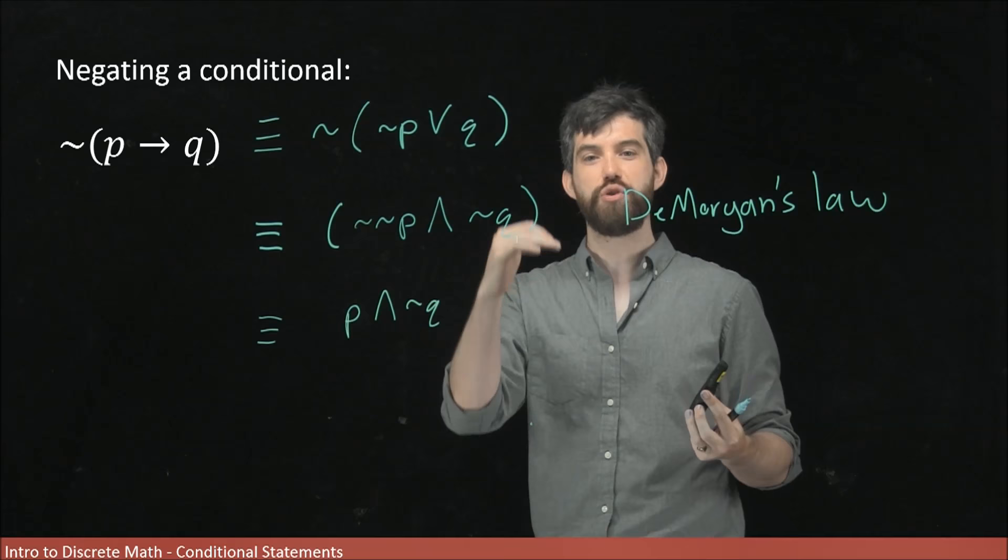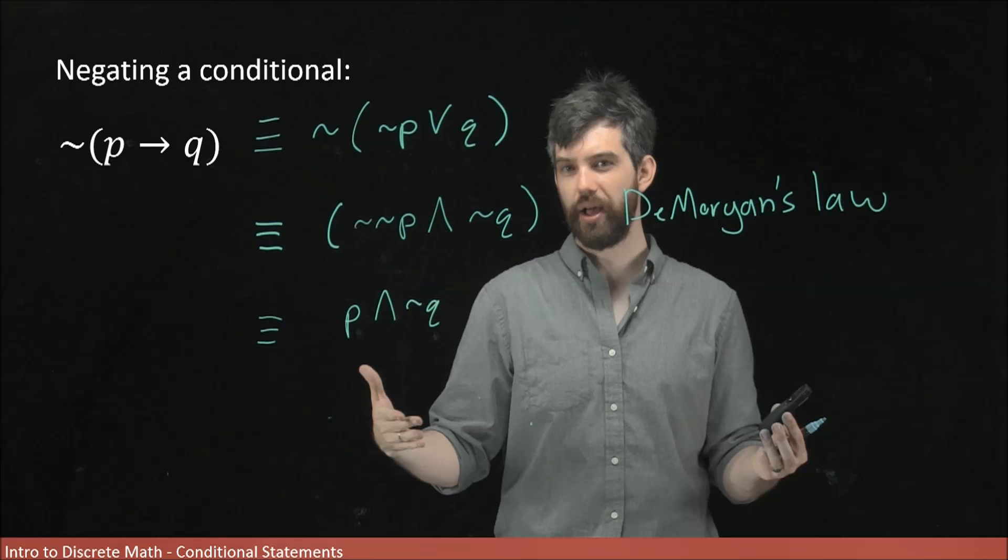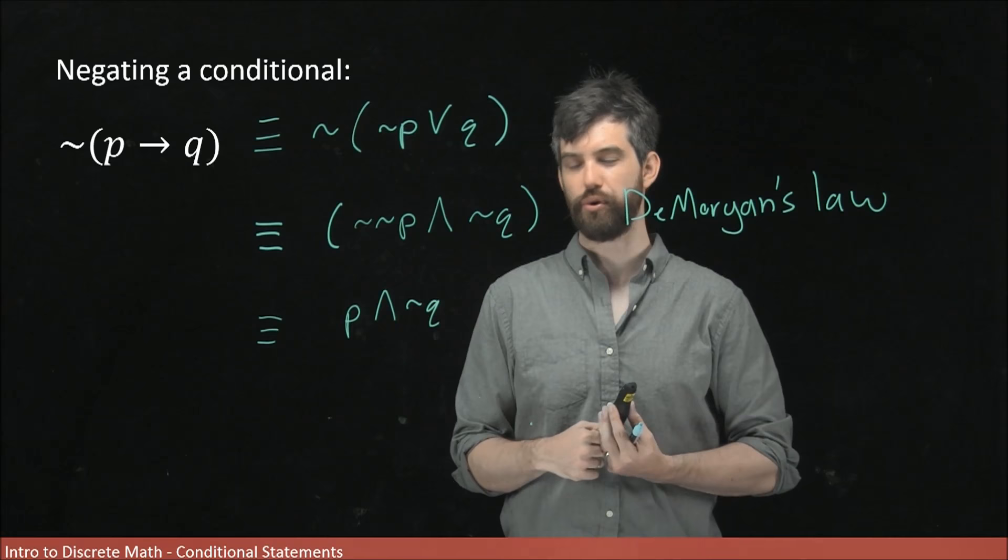The first one has to be true—the assumption—and it has to be the case that the conclusion needs to be false. That was the one scenario. The other scenarios, like for example when p was false, those were lumped into the vacuously true scenario. And of course when p was true and q was true, that was also going to be true for the implication as well.